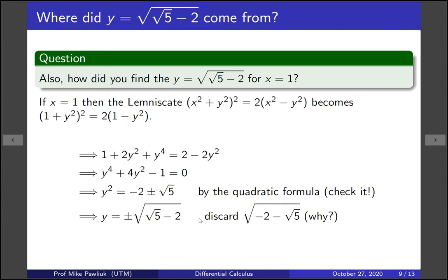Now let's also go back to the original question. The question was if x = 1 how come y equals this thing is on the graph? Well what this tells us is that not only is the positive root on the graph, the negative root is also on the graph. So we actually have more information. So we actually determined that (1, -√(√5 - 2)) will be on the lemniscate as well.